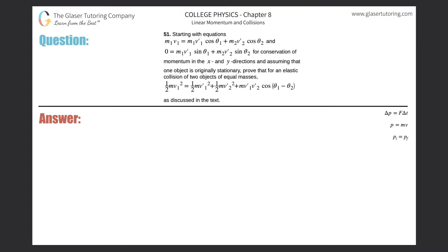Number 51. Starting with equations for conservation of momentum in the x and y directions, and assuming that one object is originally stationary, prove that for an elastic collision of two objects of equal masses, this equation holds. These equations are conservation of momentum for an elastic collision in the x direction and the y direction. What we're going to try to do is manipulate these two equations so that it yields this target equation.